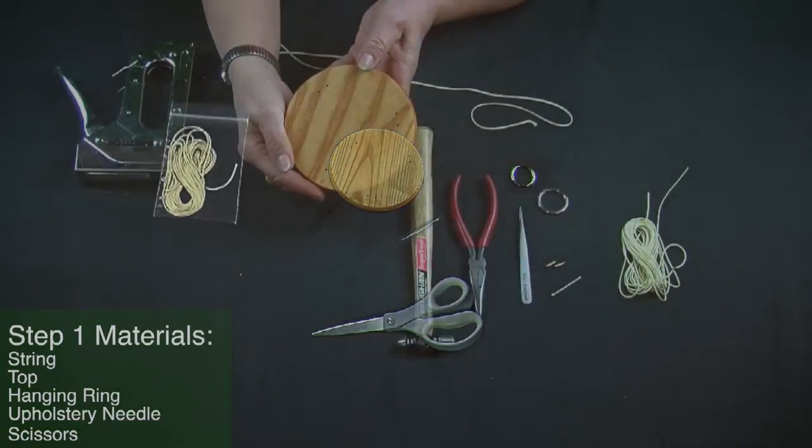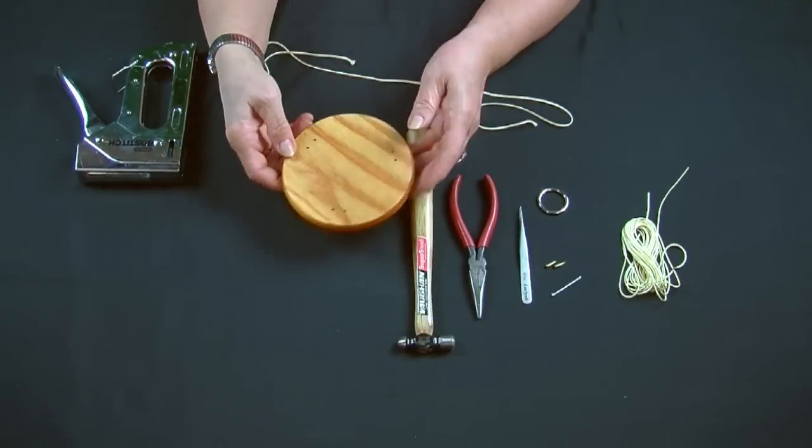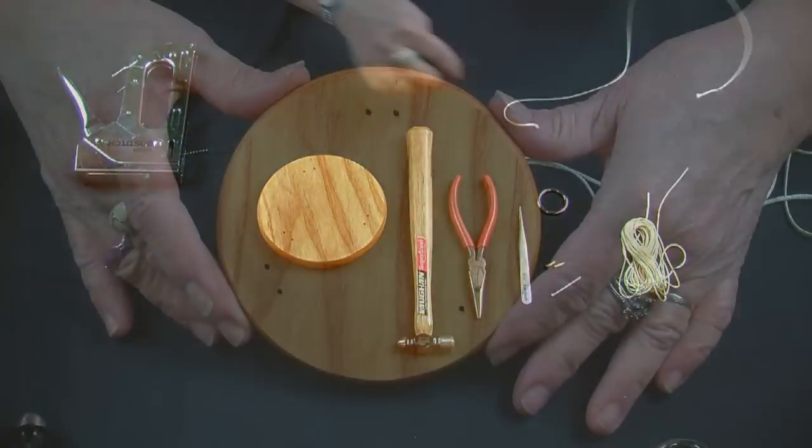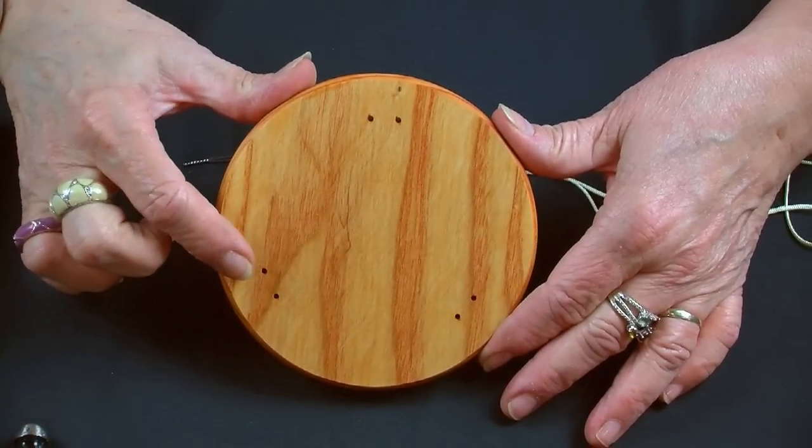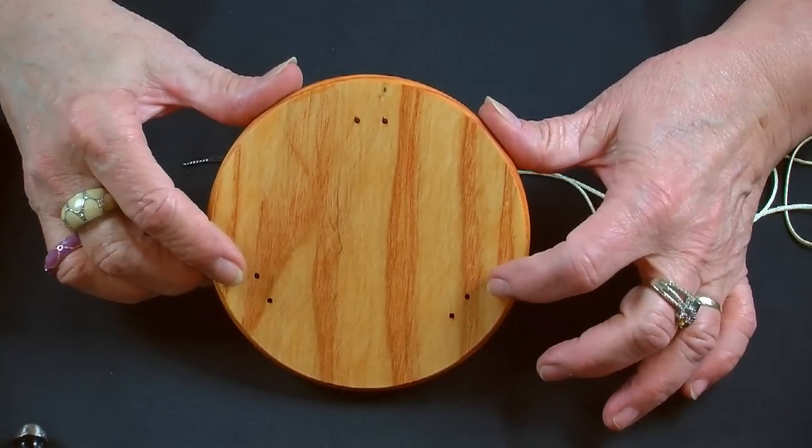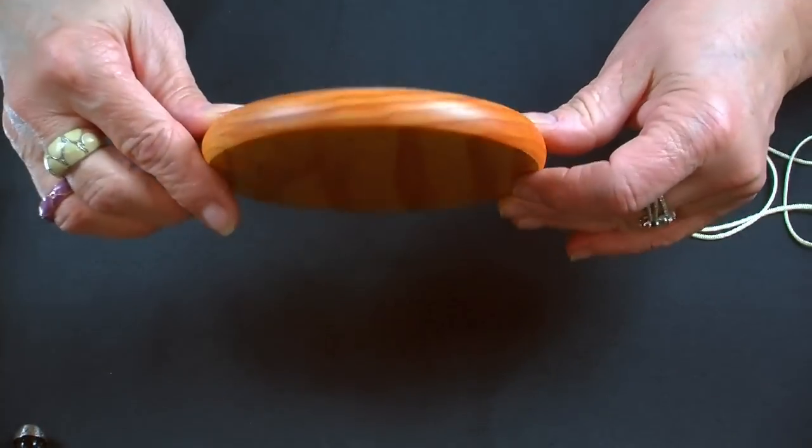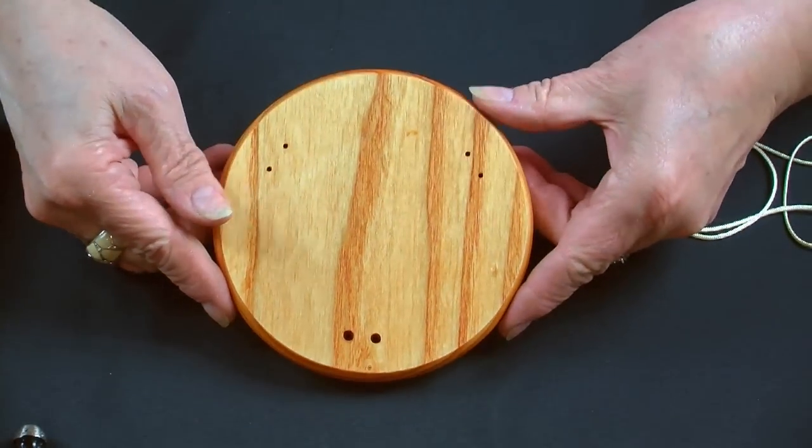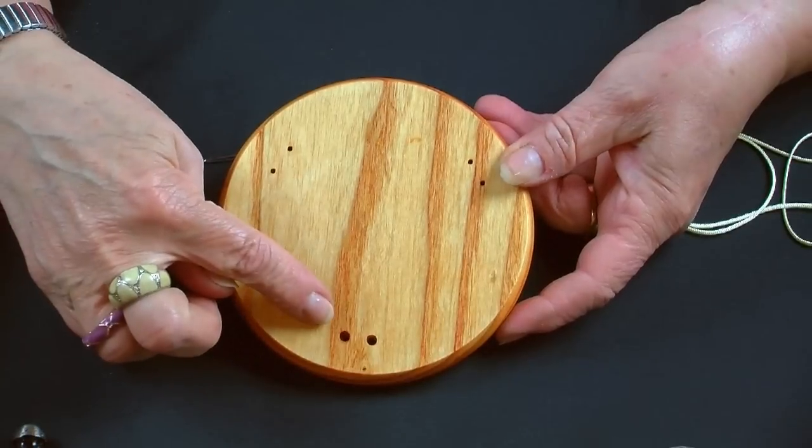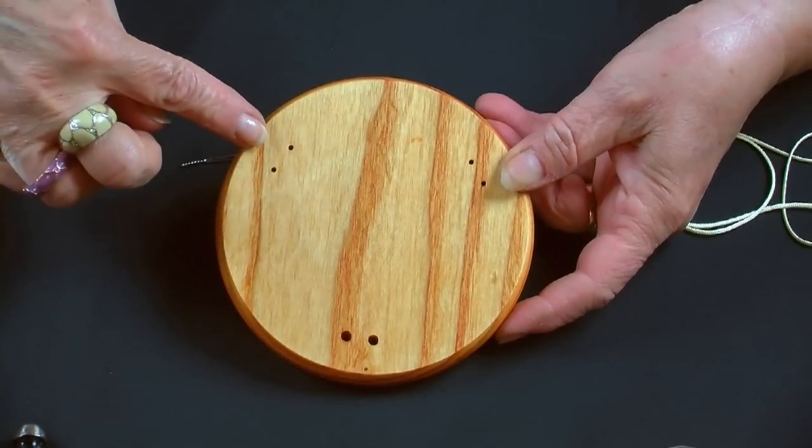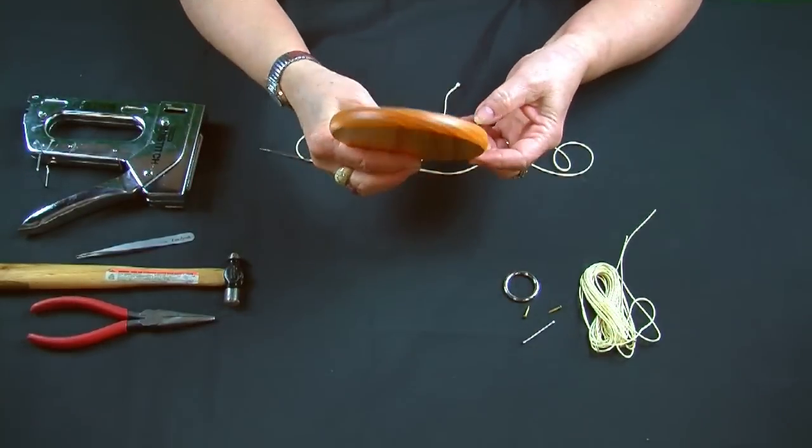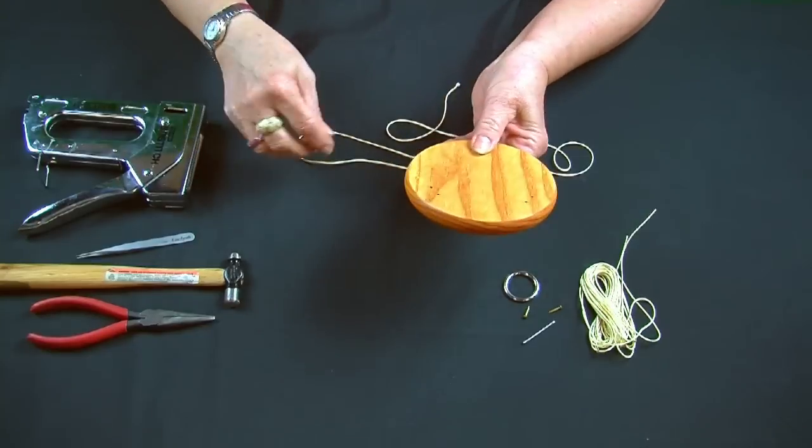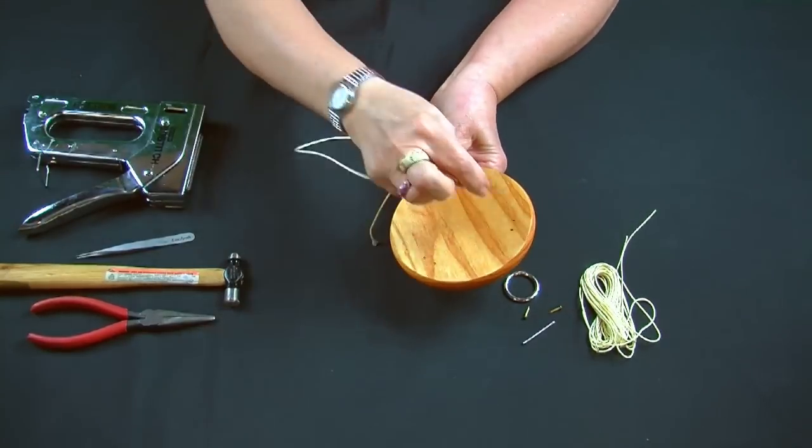For the five and a quarter inch top, you will need to cut your string approximately 35 inches. On your chime top, there are a set of six pre-drilled holes. This is for the top strings and metal hanging ring. On one side of the top, you'll notice that there are two holes that are drilled slightly larger than the other side. Place your thumb over these holes and flip the top over. You'll want the side face down to begin with the larger holes closest to your body.